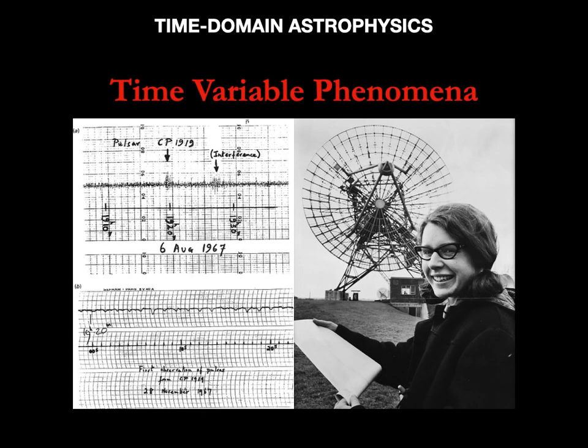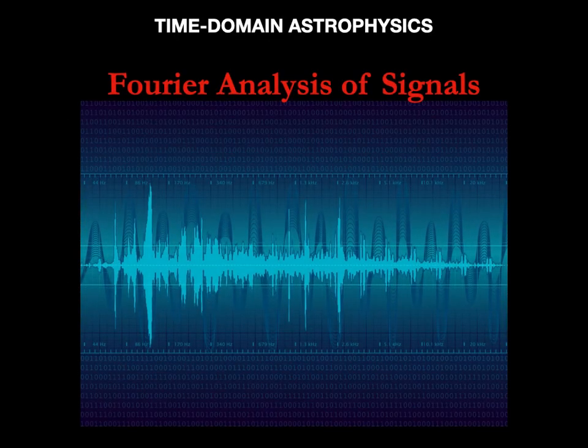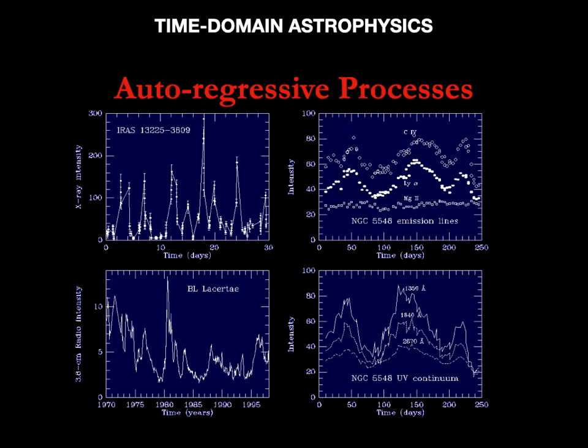In the fourth course we are proposing, we will begin by developing the knowledge of variable phenomena in astrophysics, seen as a fundamental source of scientific information. It will begin with an overview of the main variable phenomena in the cosmos. In this photo, we see Jocelyn Bell at the time of her discovery of the pulsars in 1967, when she was just 24. Then we will learn the fundamental tools for the analysis of variable signals: Fourier analysis with applications to stellar variability, to exoplanet transits, and naturally to pulsars. We will analyze in detail the so-called autoregressive phenomena, for example the variability of active galactic nuclei.